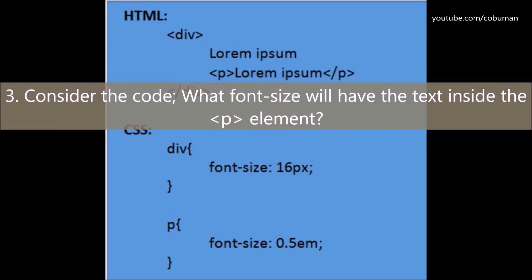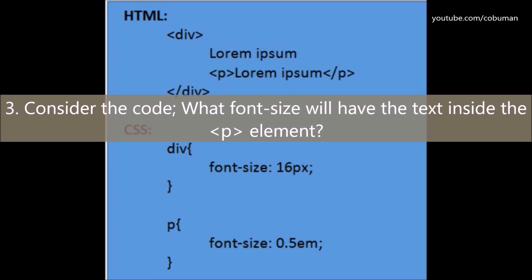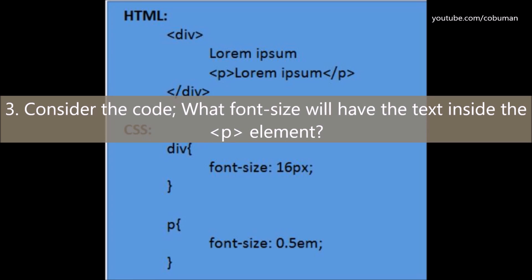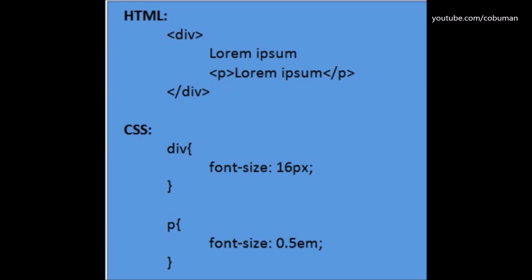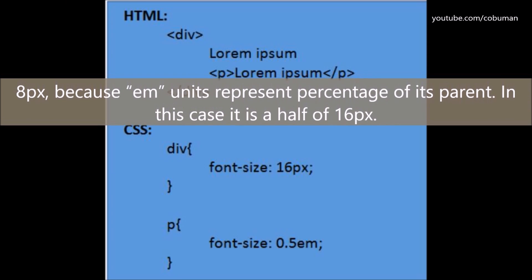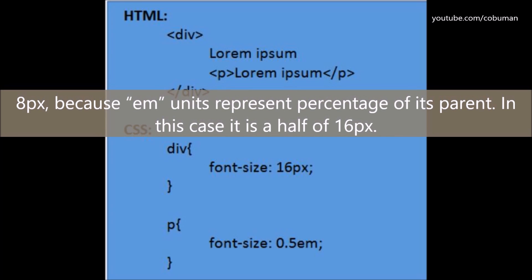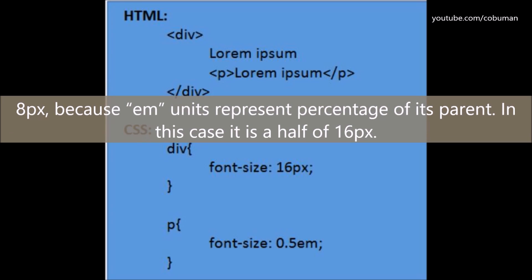Question number three: Considering the code, what font size will the text inside the P element have? The answer is eight pixels, because EM units represent a percentage of its parent. In this case, it is half of 16 pixels.